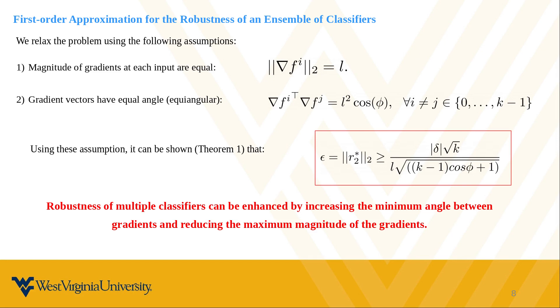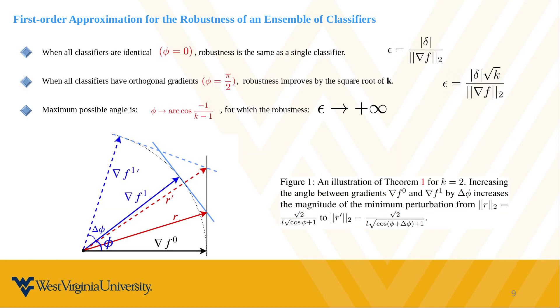Consequently, we compute a lower bound to the robustness of the ensemble according to the geometric properties of the gradients and demonstrate that the robustness of the ensemble is proportional to the angle between gradients and the inverse of the magnitude of gradients.